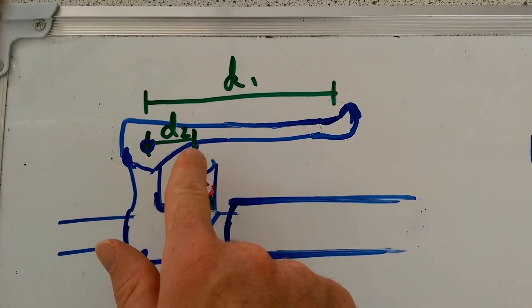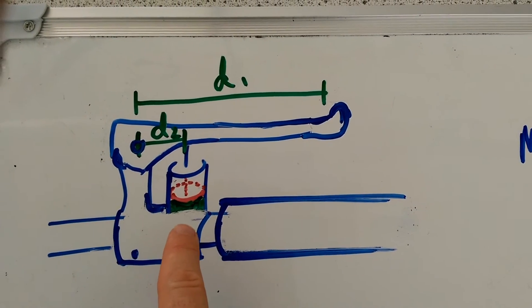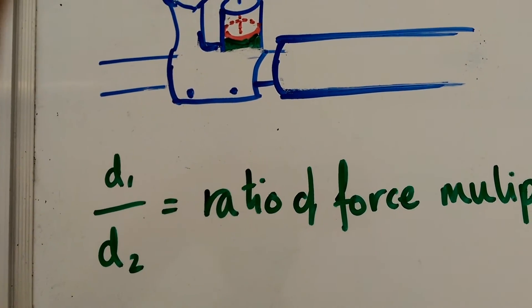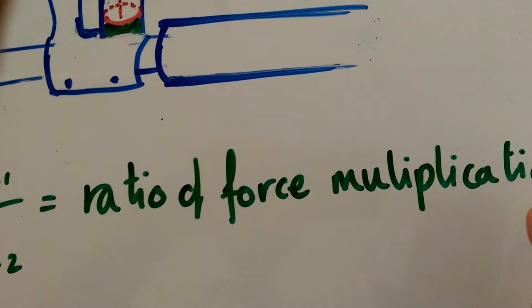And that is going to be multiplied in the ratio d1 to d2, where d2 is the distance between the piston and the pivot. So in other words, the ratio d1 over d2 is going to be the ratio of force multiplication.